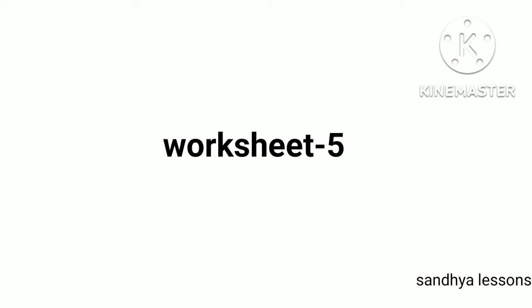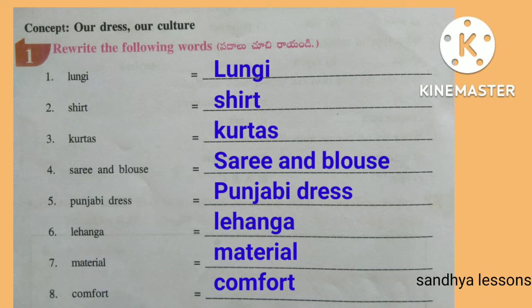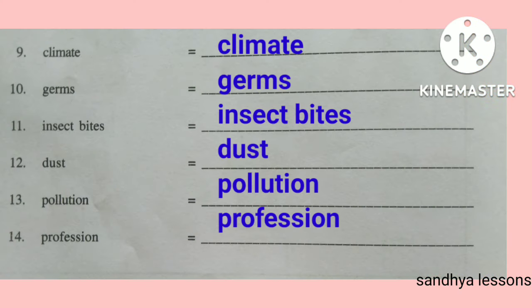Worksheet 5. First, rewrite the following words: Lungi, Shirt, Kurtas, Saree and Blouse, Panjabi Dress, Lehenga, Material, Comfort, Climate, Germs, Insect Bites, Dust, Pollution, Profession.